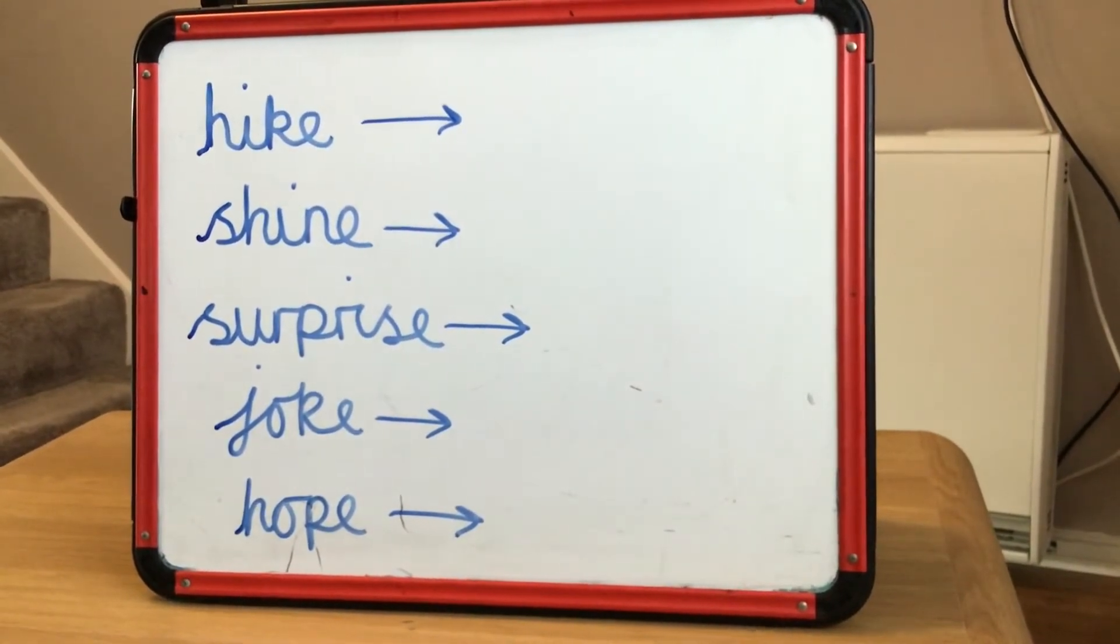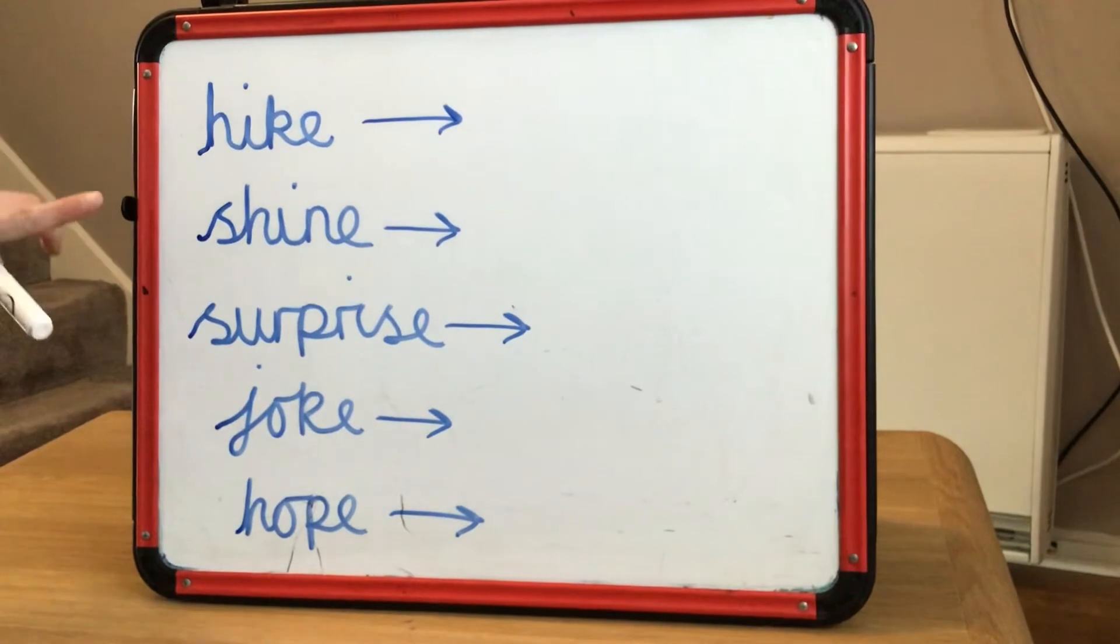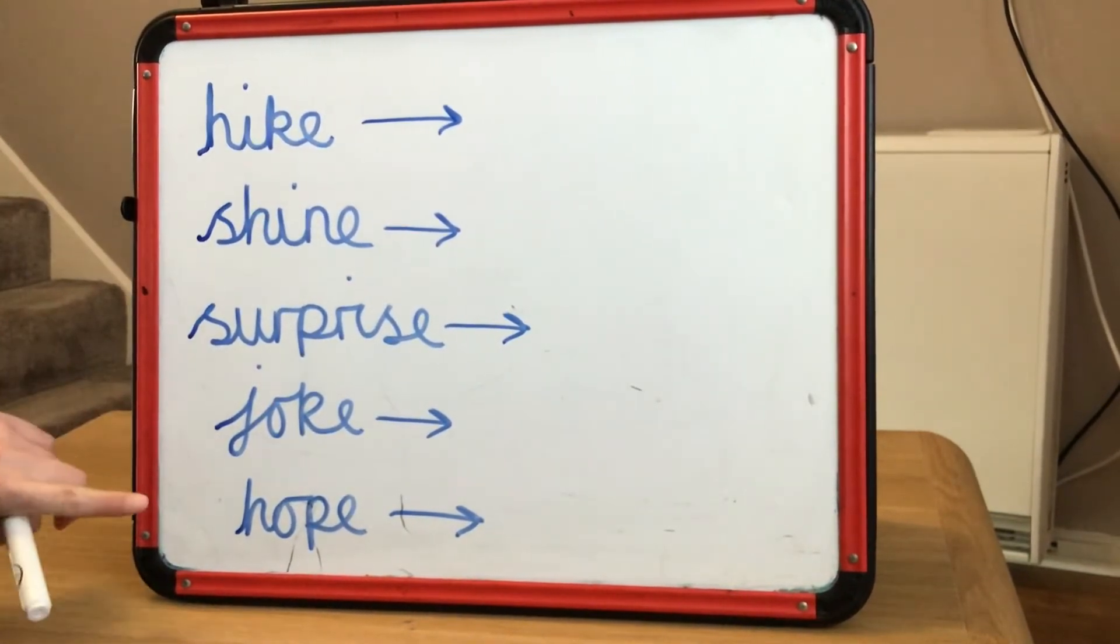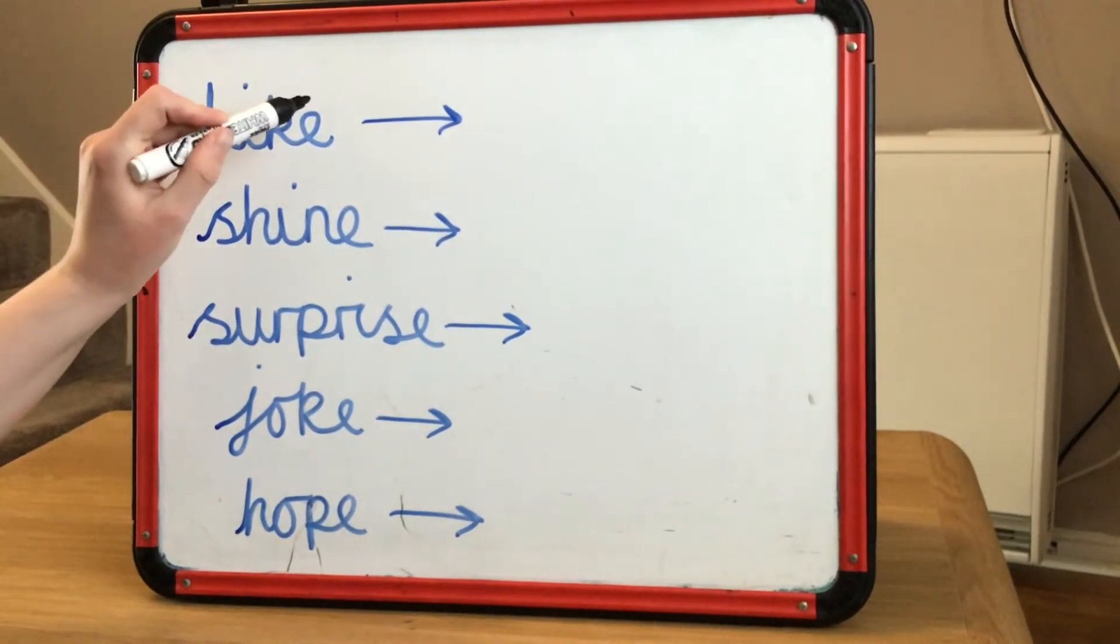So you can see here we've got hike, shine, surprise, joke, and hope. These are all verbs that are split digraphs. When we want to add the suffix '-ing', we need to cross out the e.